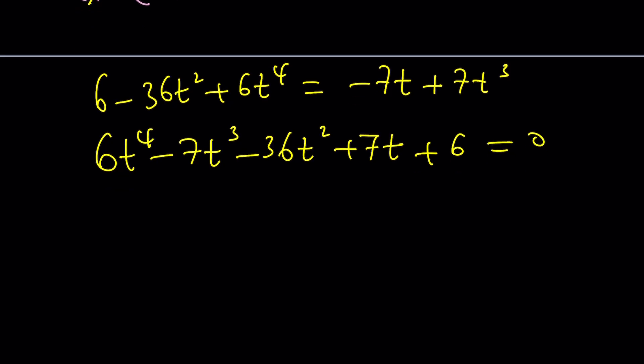6T to the fourth minus 7T cubed minus 36T squared plus 7T, not 70, 7T. And then plus 6 equals 0. Well, this looks like a symmetrical equation. Beautiful, beautiful. What we can do is actually divide everything by T squared. And then use an awesome transformation or just some type of substitution. If you divide everything by T squared, which is, by the way, the term in the middle or the variable in the middle,